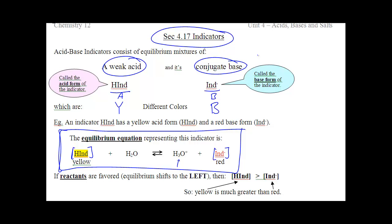So this is a weak acid ionizing in water to produce H3O+ and its conjugate base IND minus, and the weak acid and its conjugate base are different colors — in this case yellow and red. If you have more IND minus, if you've shifted the equilibrium left, you're going to be yellow. If you shift it right, you're going to be red. Whatever way this indicator is shifted, that's the color that you see.